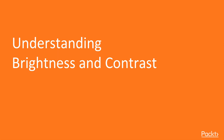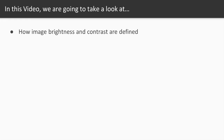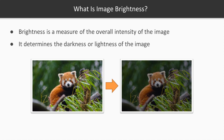So what are image brightness and contrast? We'll see how image brightness and contrast are defined and the effects changing them has on images. Brightness is a measure of the overall intensity of the image — it determines how dark or light the image appears. Given the image on the left, decreasing the brightness will give us the image on the right, which is obviously darker.